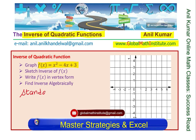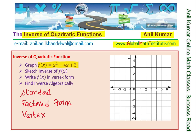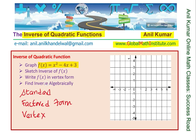Basically standard form, factored form, and vertex form. Let's begin with the function given to us: f(x) equals x squared minus 4x plus 3. We are going to sketch the inverse of this function and also the graph of the function. Then we will find the vertex form and find the inverse algebraically.